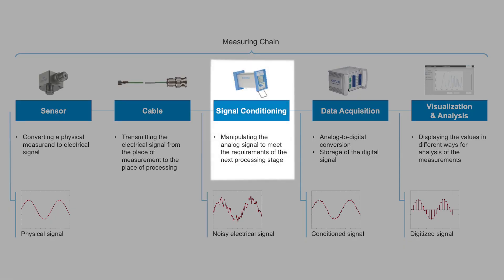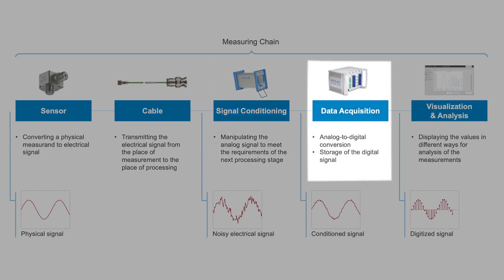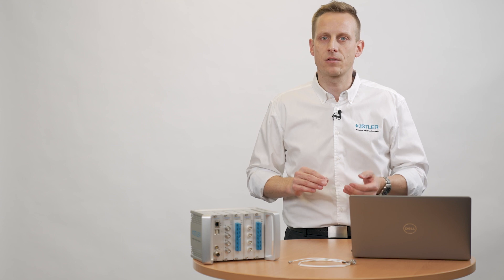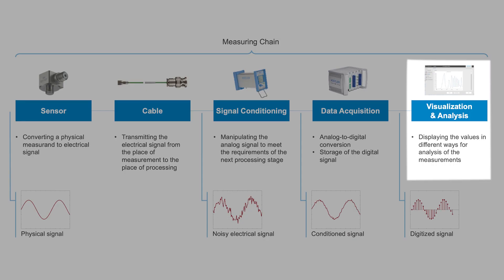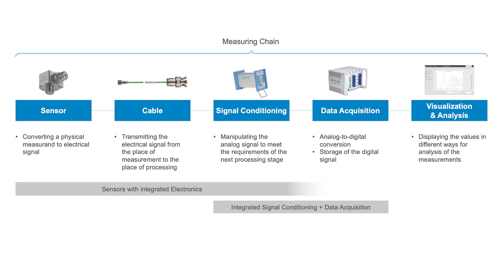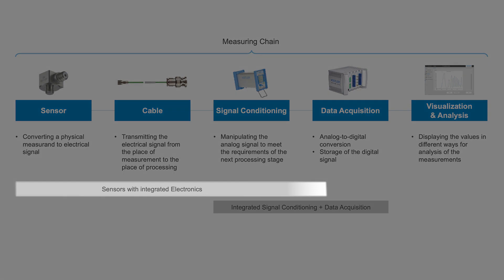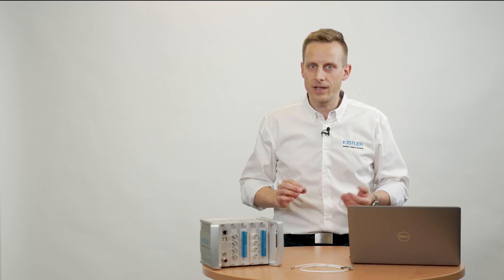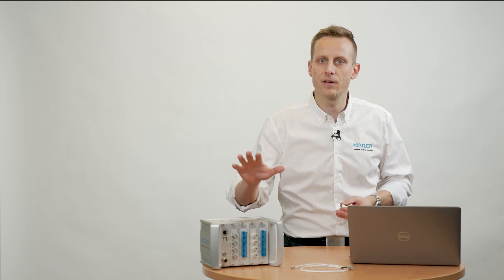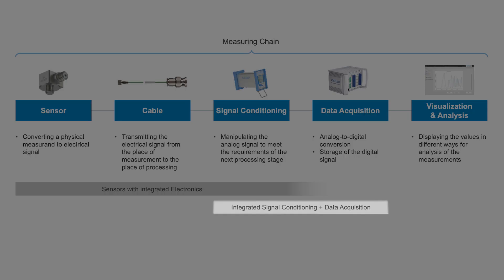The signal conditioning stage is used to transform the analog signal before converting it to digital. This normally includes amplification and filtering. The data acquisition converts the analog input signal into digital values and stores it for further processing. Visualization and analysis is the actual goal of the measurement. Depending on the measurement and application, sensors with integrated electronics are available — with that, additional signal conditioning or even digitalization may become obsolete. Very common today is that data acquisition devices already include a full signal conditioning stage, but there are still cases with special requirements where an external signal conditioning can make sense.